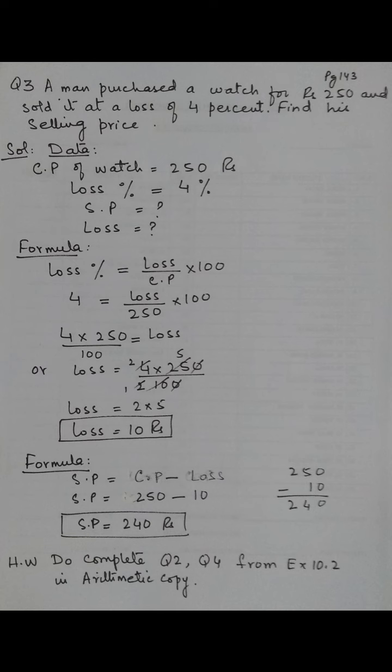The unknown quantity goes on the left, so loss is equal to 4 multiply by 250 divided by 100. The 100s cancel and we get 4.